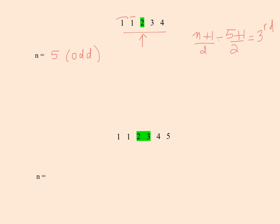Now let's look at the next set of numbers: 1, 1, 2, 3, 4, and one more. In this case, n = 6. So if we have an even number of numbers, there are two middle numbers. Once we locate the two middle numbers, we take the average of them, and in this case it's 2.5. Taking the average of the two middle numbers gives the median.